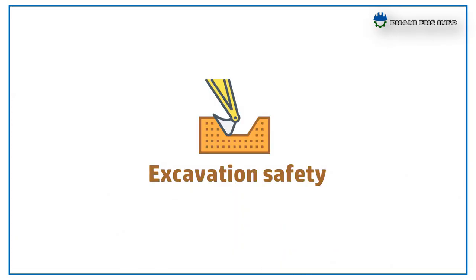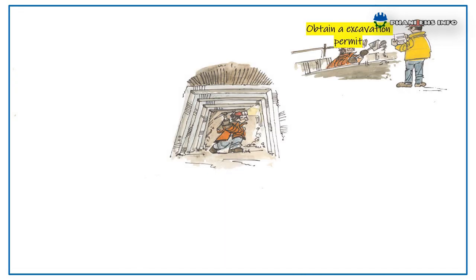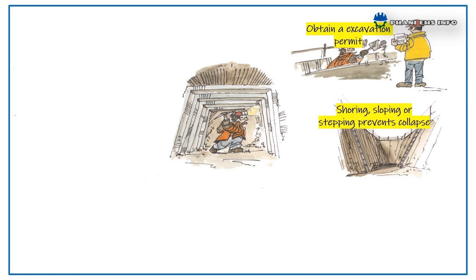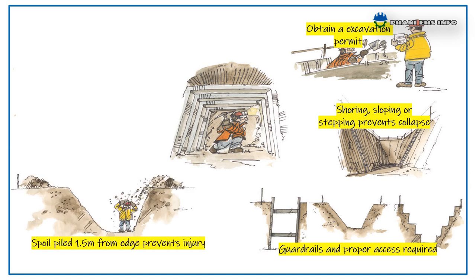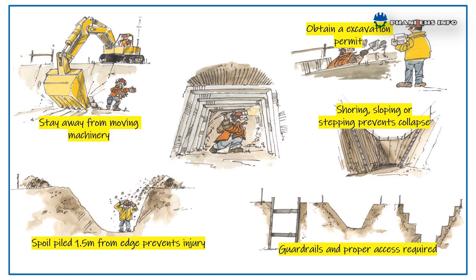Excavation safety: Similar to confined space, obtain an excavation permit. Shoring, sloping, or stepping prevents collapse. Guard rails and proper access are required at excavation areas. Spoil must be piled 1.5 meters from the edge to prevent injuries. Stay away from moving machinery near excavation areas.